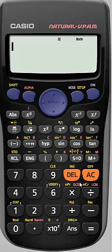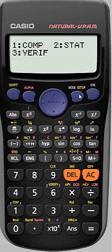To do that we go up to the mode button, press mode and we'll see that on the screen there are three modes that we can choose from. The one we're interested in is STAT or the number 2, so we press 2.